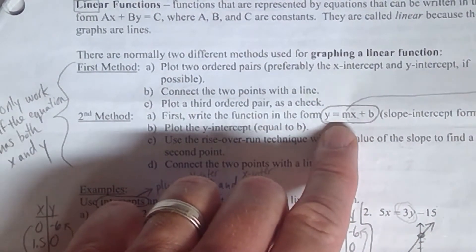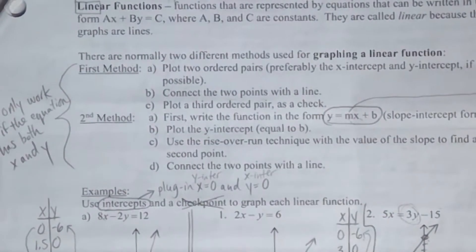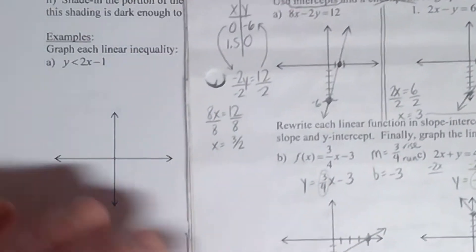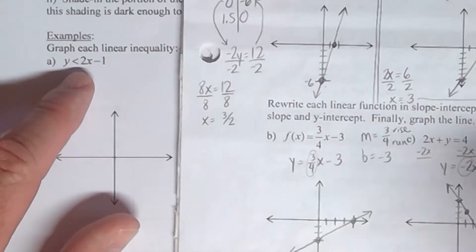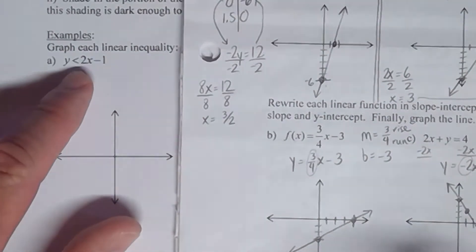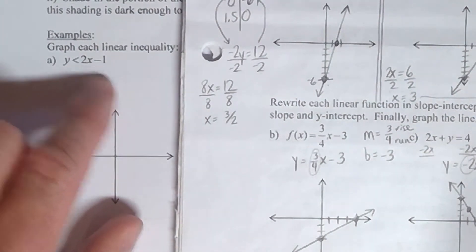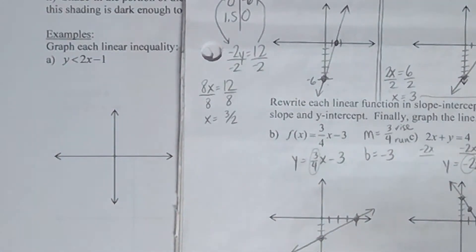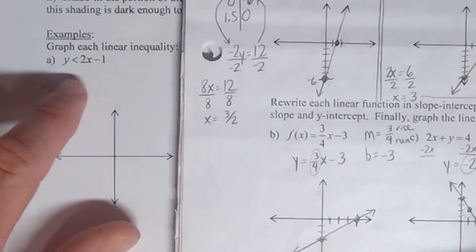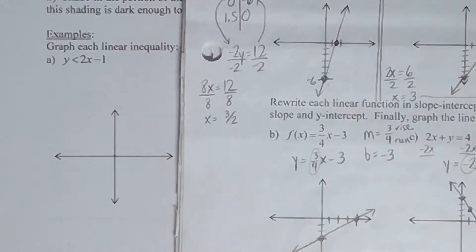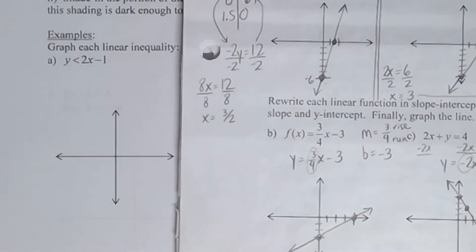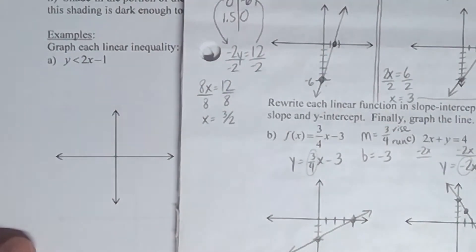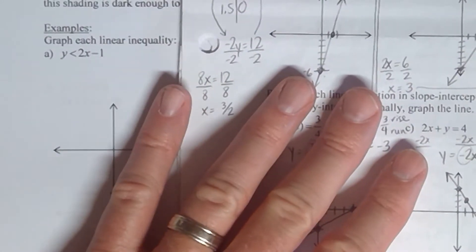The m tells us the slope and the b tells us the y-intercept. But because it's an inequality, we're not just going to graph the line. A big mistake students sometimes make is that this looks so similar to these problems that they'll just graph the line and stop right there. We're not going to do that, because the inequality means so much more than just the equal sign. The line is going to be part of it — in fact, it's the first step.